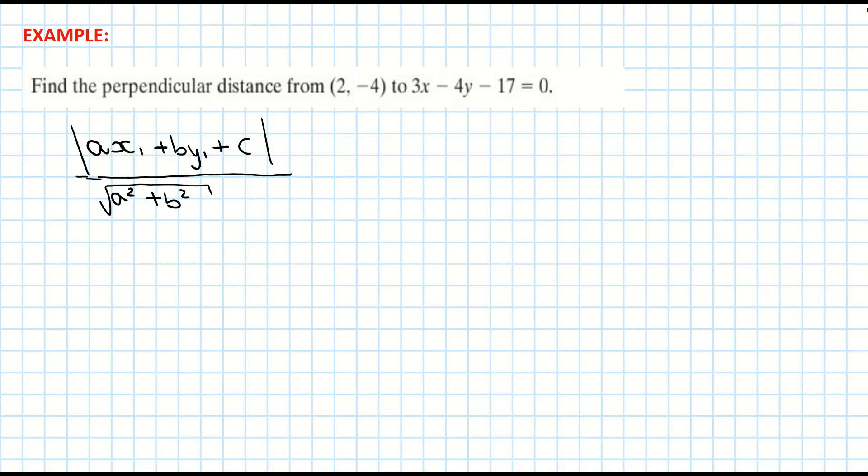Next thing I would do is write down the values of my a, b, and c before I sub them into my equation. My a is the number in front of the x, which is 3. My b is the number in front of the y, which is -4. And my c is the constant on its own, which is -17. My x₁ and my y₁ are my coordinates.